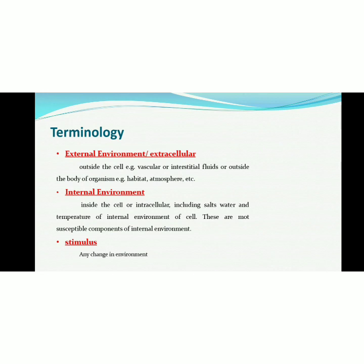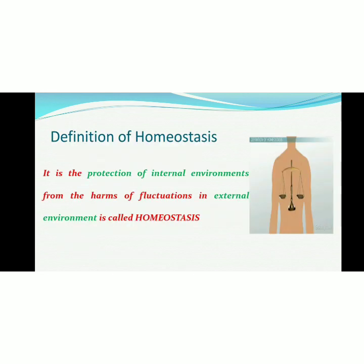These three components — salt, water, and temperature — are most susceptible to external fluctuations, along with nitrogenous waste. Another key term is stimulus: if there is any change in the environment, our body receives a stimulus. The definition of homeostasis is basically the protection of the internal environment from the harms of fluctuations in the external environment.